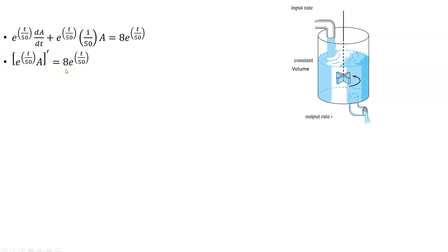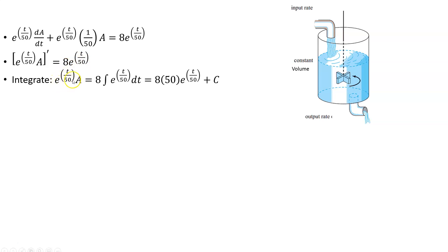We integrate both sides of this equation. On the left side, we take the antiderivative of a derivative, which is just e^(T/50) times A. For the right side, 8 comes out as a constant, and then we apply our rules for integrating base-e exponentials. The 50 becomes a coefficient, so the antiderivative gives us 400·e^(T/50) plus C. So this is our solution to the differential equation, which is e^(T/50) · A = 400·e^(T/50) + C — our general solution.